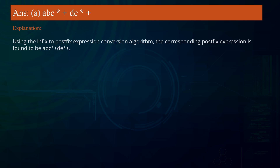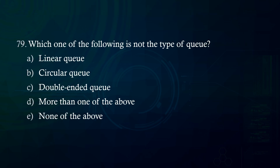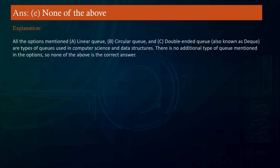Which one of the following is not a type of queue? A. Linear queue B. Circular queue C. Double-ended queue D. More than one of the above E. None of the above. Answer: None of the above. Explanation: All the options mentioned — A. Linear queue, B. Circular queue, and C. Double-ended queue (also known as dequeue) — are types of queues used in computer science and data structures. There is no additional type of queue mentioned in the options, so none of the above is the correct answer.